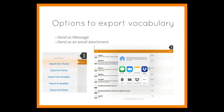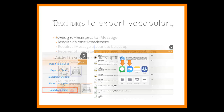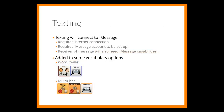Did you know you can send a customized vocabulary by email or iMessage? Export and share, and select your message method. Texting is available by iMessage — it will require an internet connection and the receiver to also have iMessage service. A texting button was added to WordPower and Multichat files in 2.9.